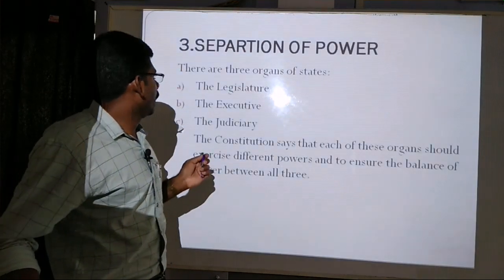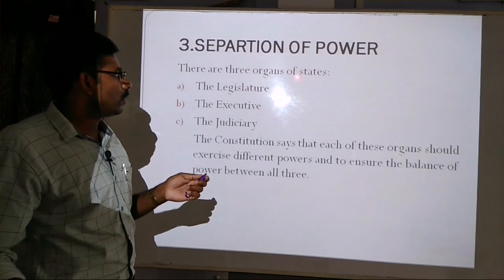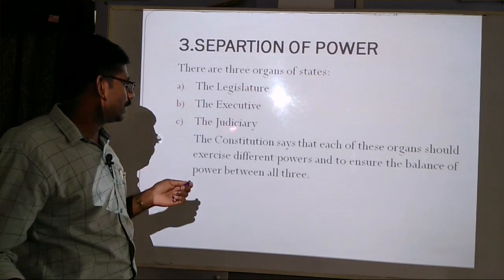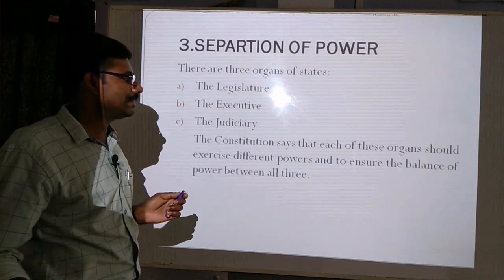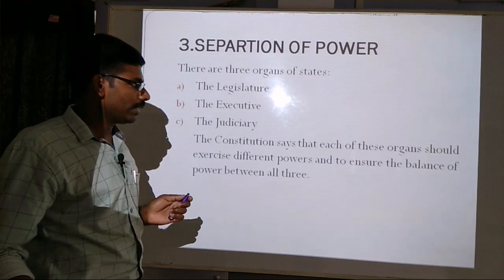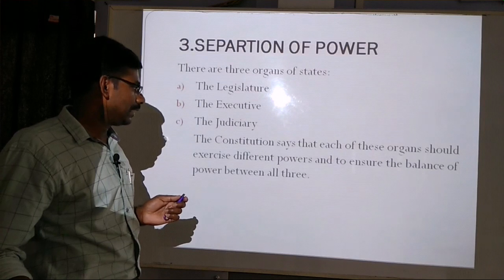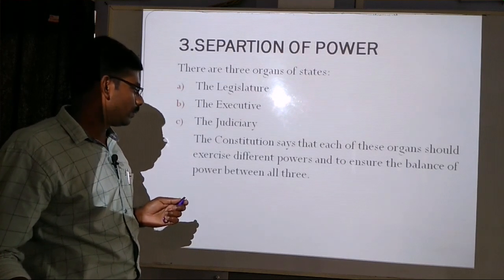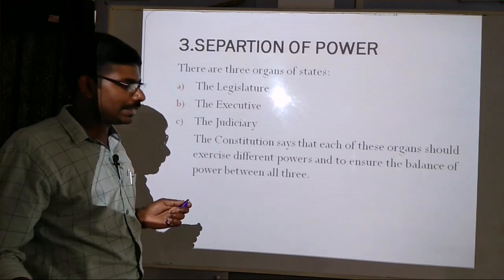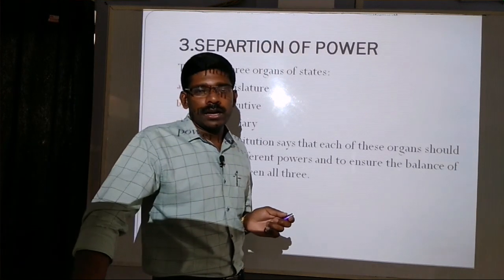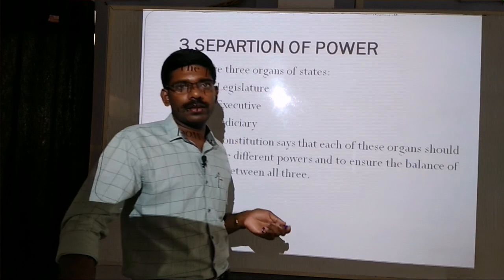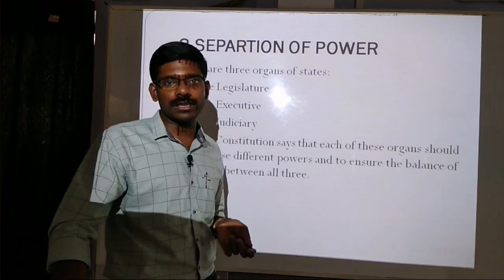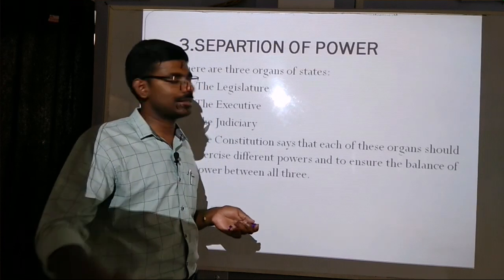The next feature is the separation of power. There are three organs of state: the first is the legislature, the second is the executive, and the third is the judiciary. The constitution says that each of these organs should exercise different powers, to ensure the balance of power between all three. These are the three main pillars of democracy — legislature, executive, and judiciary — which we will discuss in the next slide.